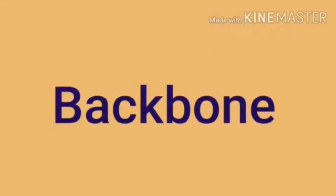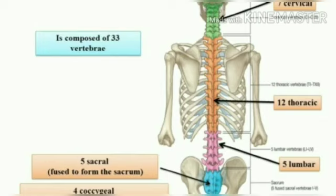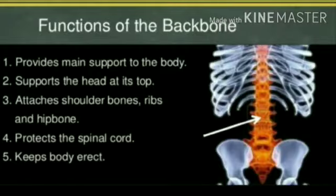The second part we are going to study is the backbone. Here you can see the backbone which is present at the back of our body, and it is also known as the vertebral column. One vertebral column is formed by 33 small vertebrae. This backbone provides support to the body.